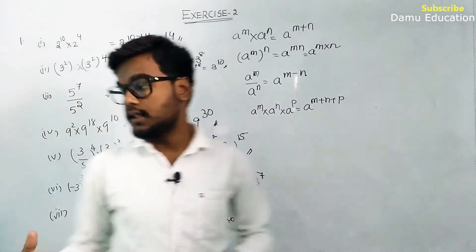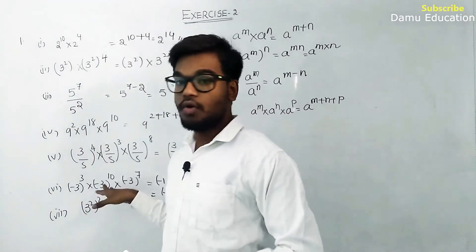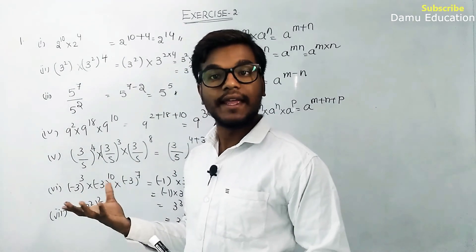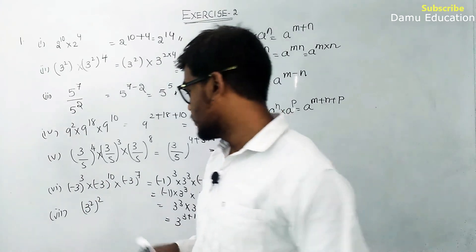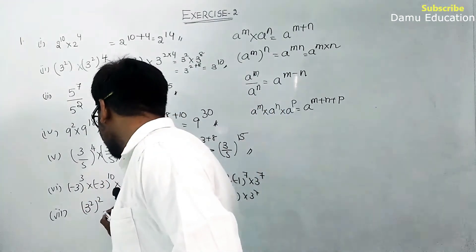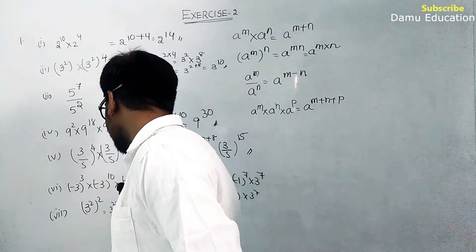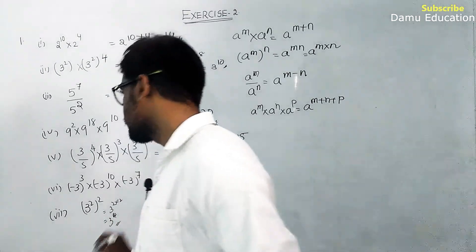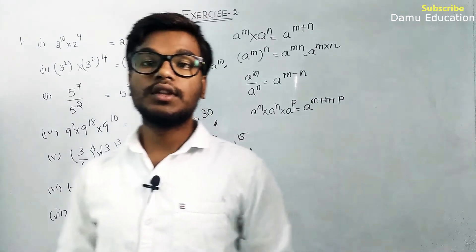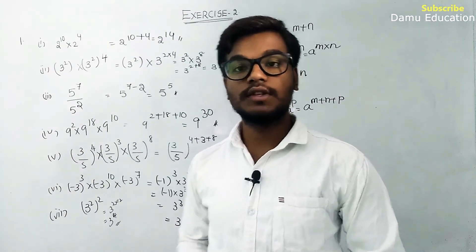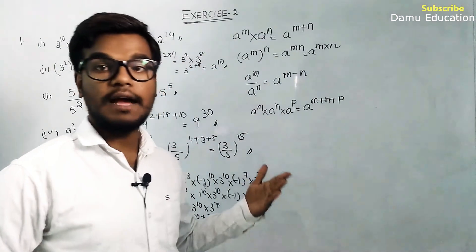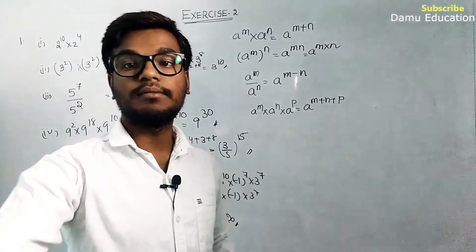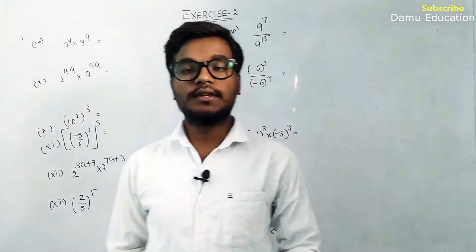Next: 3 square whole square. Using a power m whole power n equals a power m into n. So 3 power 2 into 2 equals 3 power 4. Please watch the remaining videos in upcoming classes and subscribe.